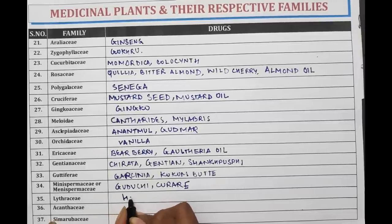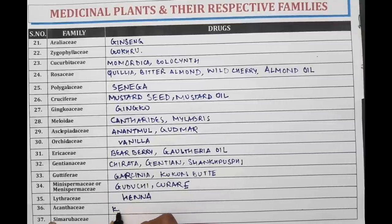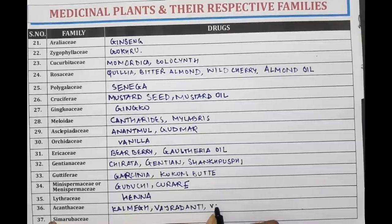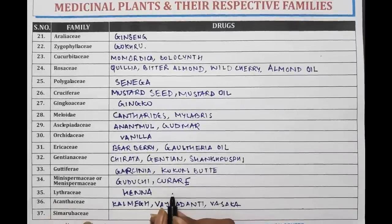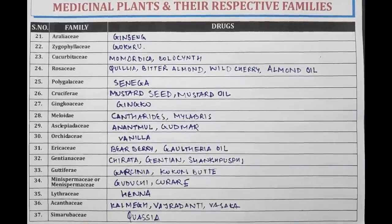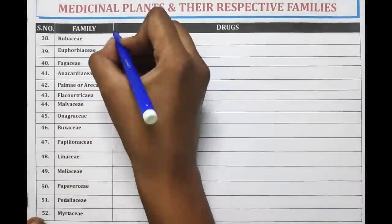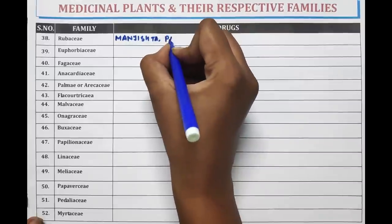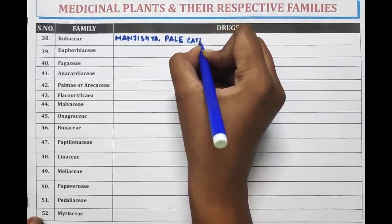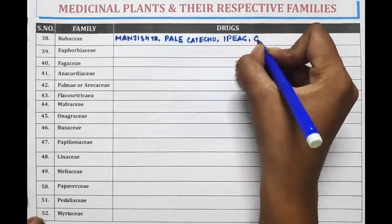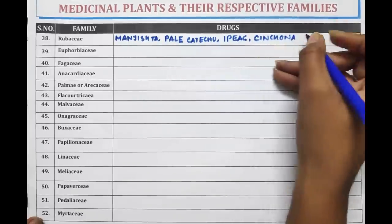Menispermaceae is the family of Guduchi or Curare. Lythraceae is the family of Henna. Acanthaceae is the family of Kalmegh, Vajradanti, and Vasaka. Simaroubaceae is the family of Manjistha, Palash Katechu, Ipecac (also known as Ipecacuanha), Cinchona, and Coffee.